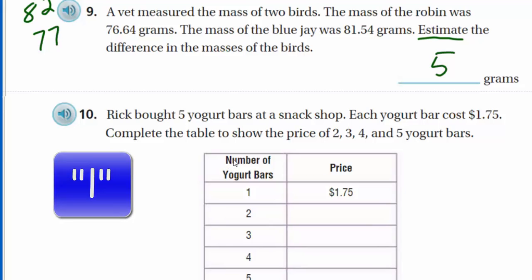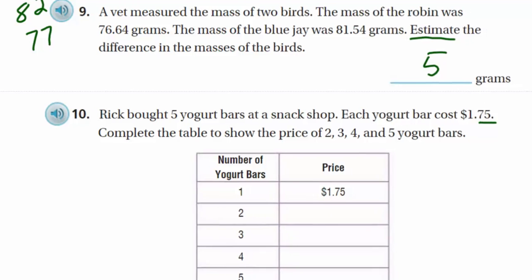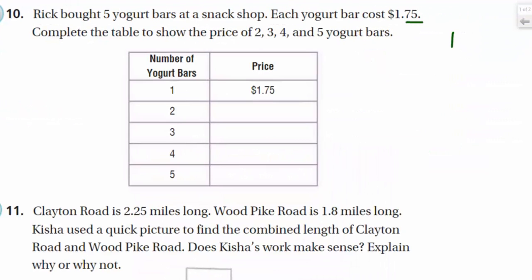Because that's something you can do in your head. Three more to get to eighty plus two. That's the way that I looked at that one there. Here it says Rick bought five yogurt bars at a snack shop. Each yogurt bar cost a dollar and seventy-five cents. And says complete the table to show the price of two, three, four, and five yogurt bars. So, this is just simple addition here. We have a dollar seventy-five. Now, if we double that, I kind of like it. If you look at seventy-five cents here, this is just how my mind's working. I know seventy-five and seventy-five together is a dollar fifty.